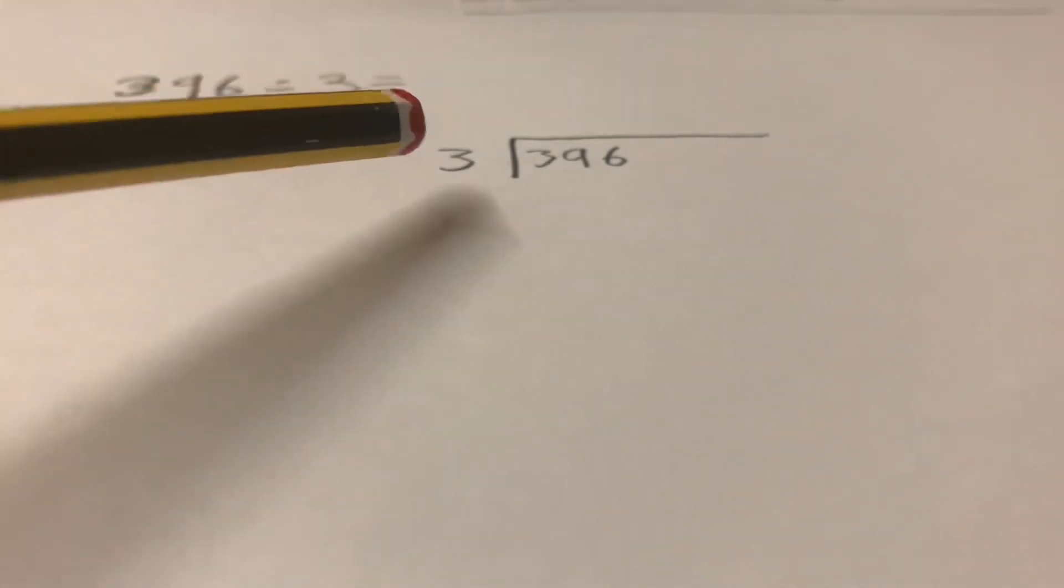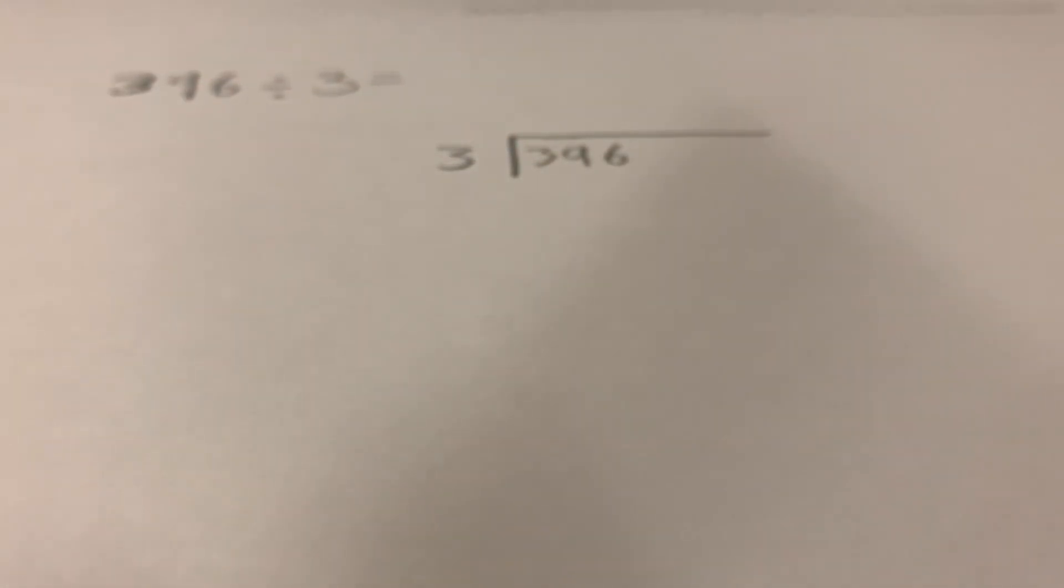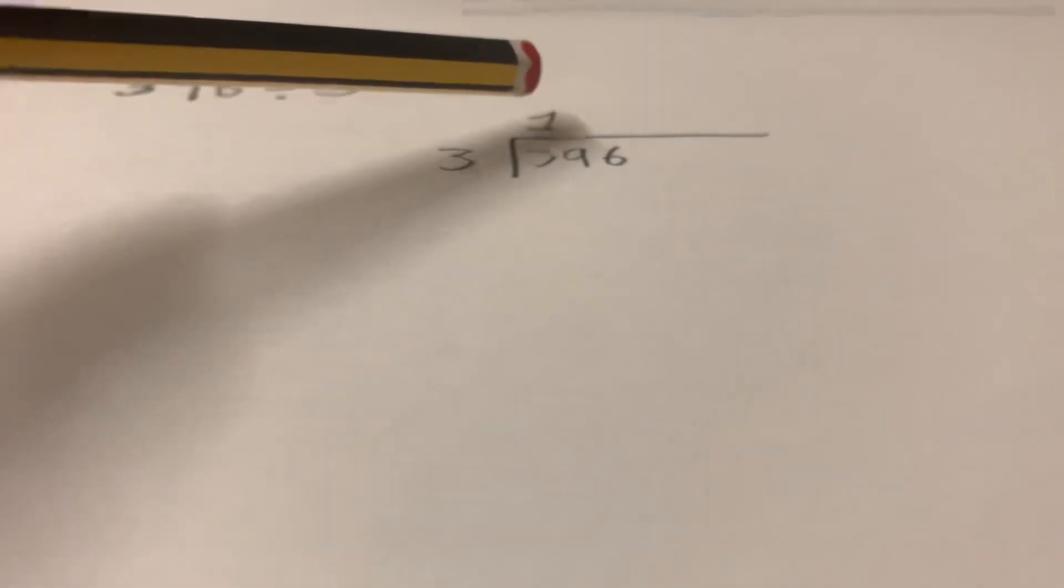We're going to start by dividing 3 by 3. So how many threes go into three? Three divided by three is one. And next, after you've written the one above here, you're going to multiply one times three, which is three.